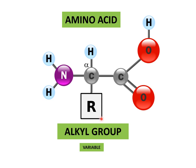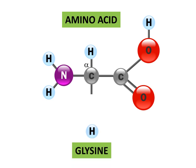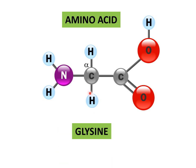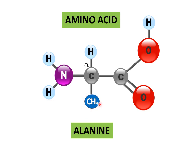Just a change in this R group has given birth to 20 different types of amino acids in nature. For example, if R is represented by a hydrogen atom, the corresponding amino acid formed is called glycine. If the alkyl group is represented by the CH3 group, then the corresponding amino acid is called alanine.